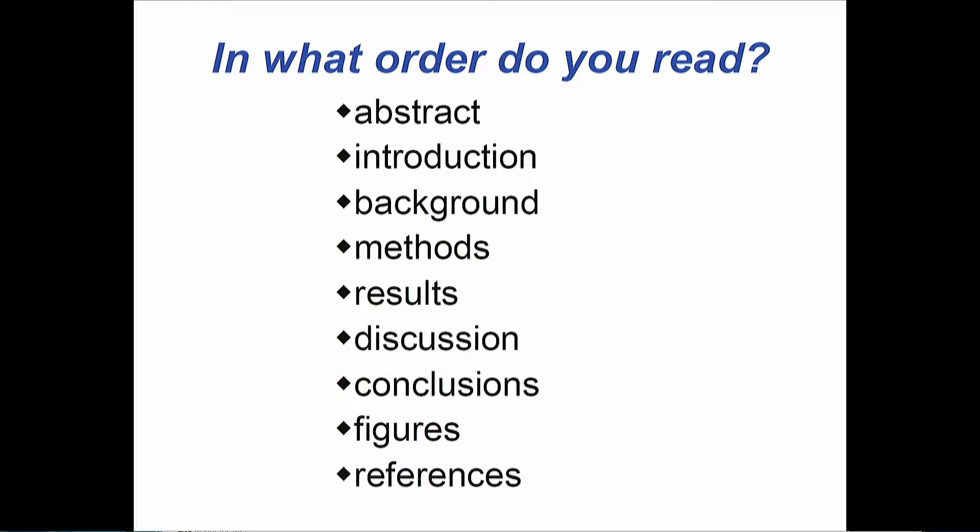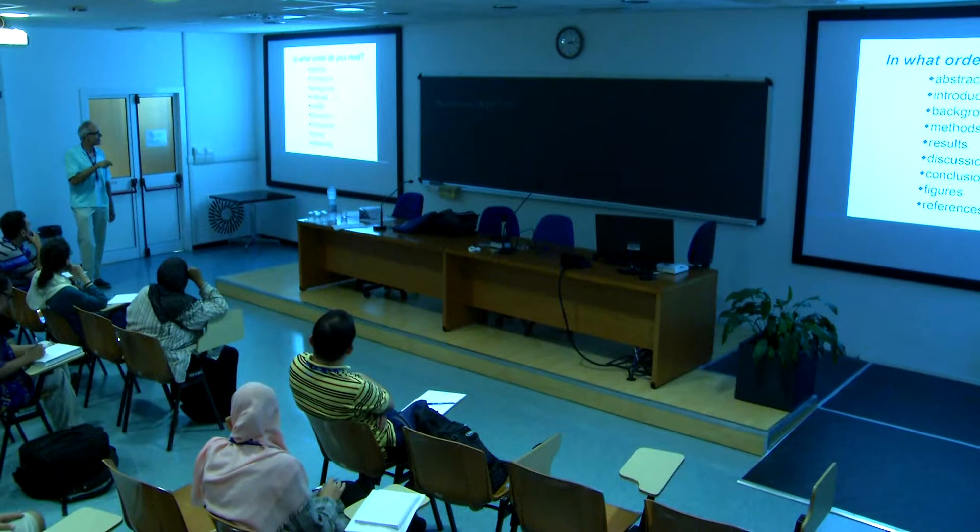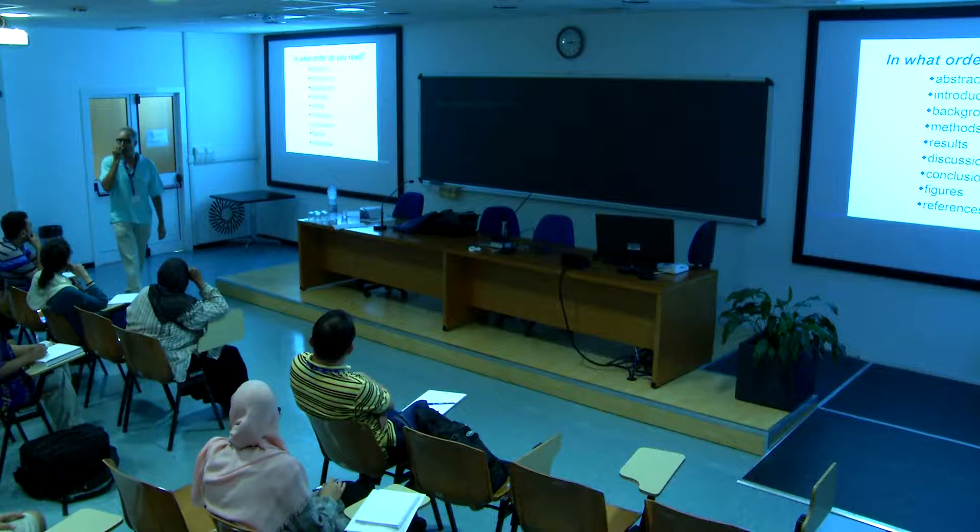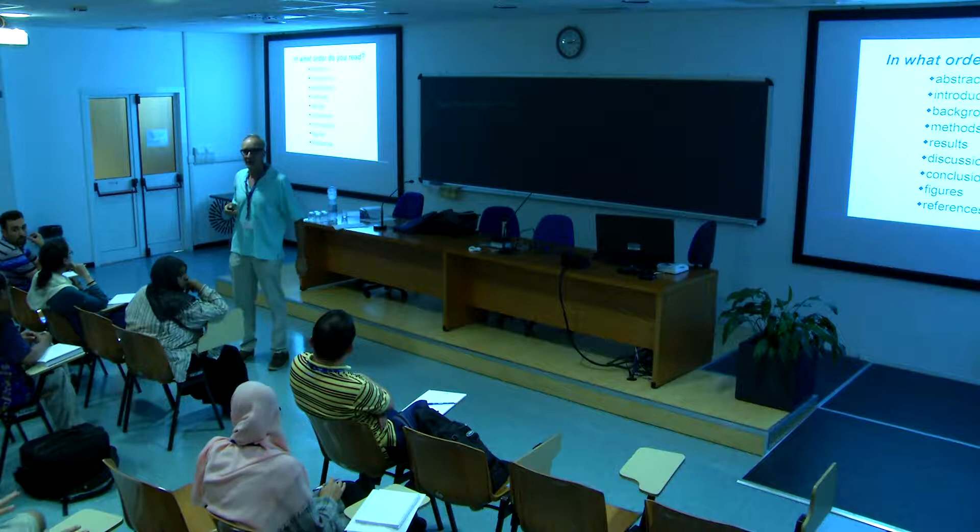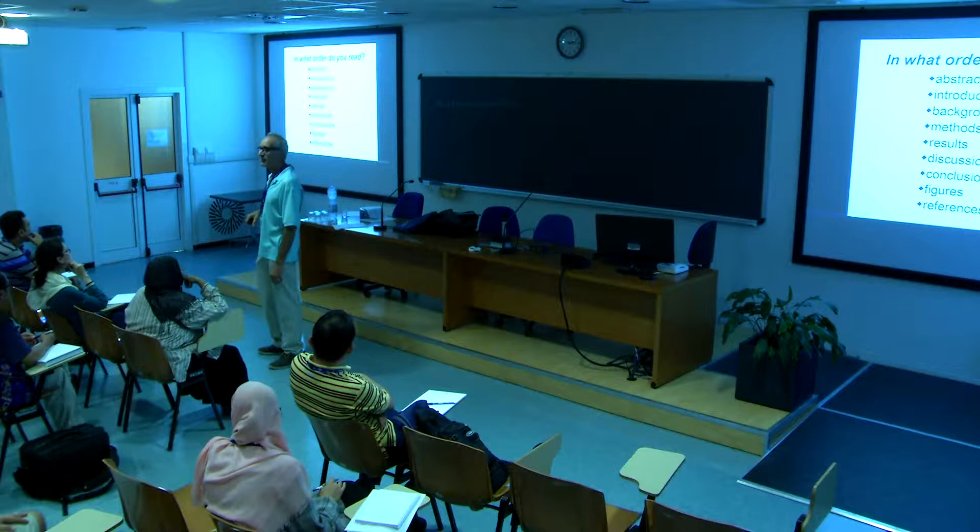You want to go ahead and give an answer? Abstract and conclusion. So Junius does abstract, title, abstract, then jumps to the conclusions. That's an interesting sequence. Notice, not in the sequence laid out here. Anybody else? Abstract and results. Abstract and then you go to the results.